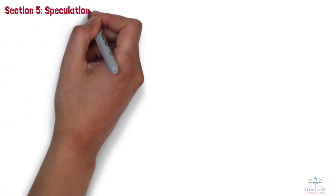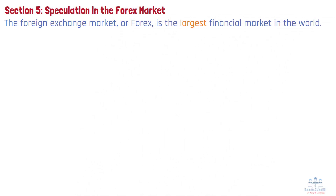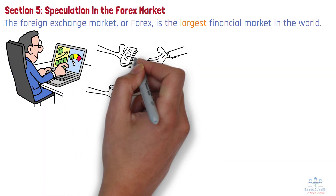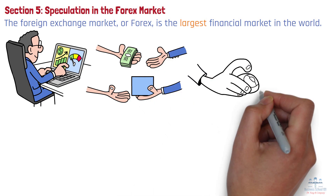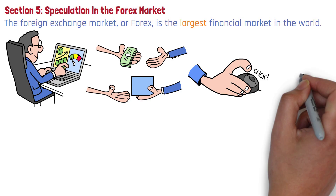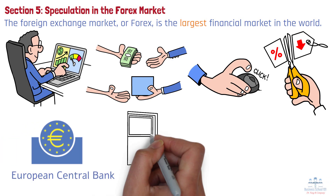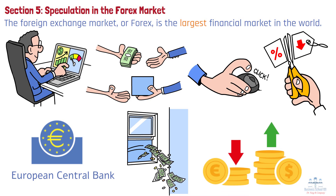Section 5: Speculation in the Forex Market. The foreign exchange market, or Forex, is the largest financial market in the world, and much of the currency movement is driven by speculation. Traders buy and sell currencies based on their expectations of future changes in value. If they believe a currency will rise, they buy it to sell at a higher price later. If they expect it to fall, they sell it off to avoid losses. This speculative trading can significantly impact short-term fluctuations in currency values. For example, if traders expect the European Central Bank to lower interest rates, they may sell euros in anticipation of the euro weakening. As more traders sell off their euros, the supply increases, driving down the value of the euro relative to other currencies like the US dollar.